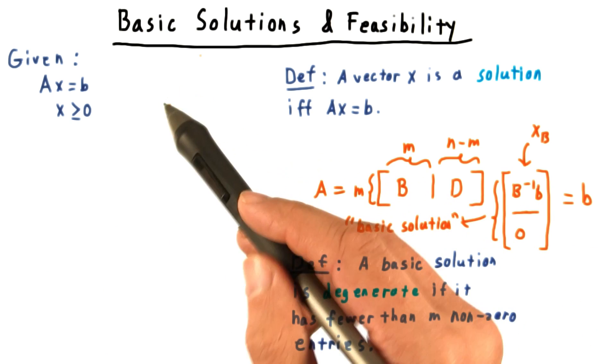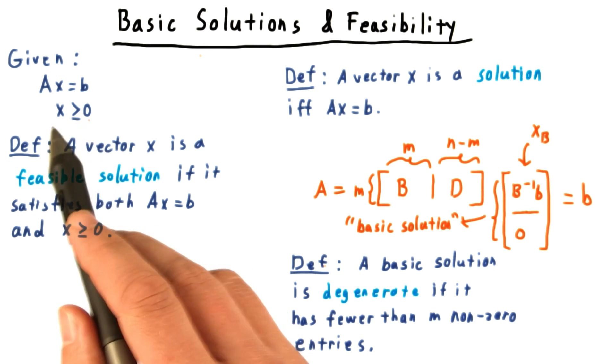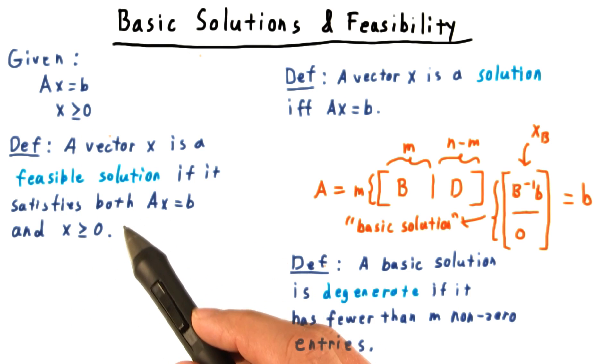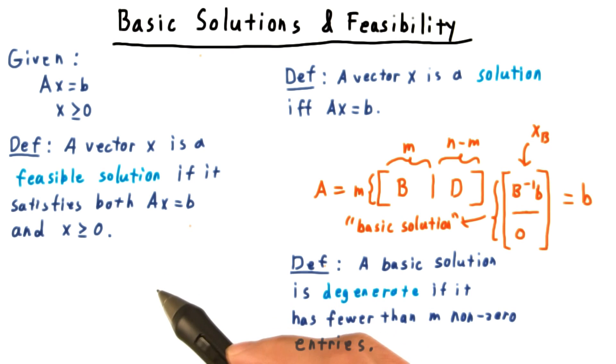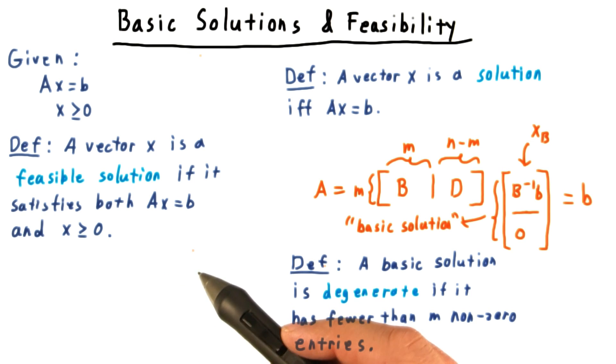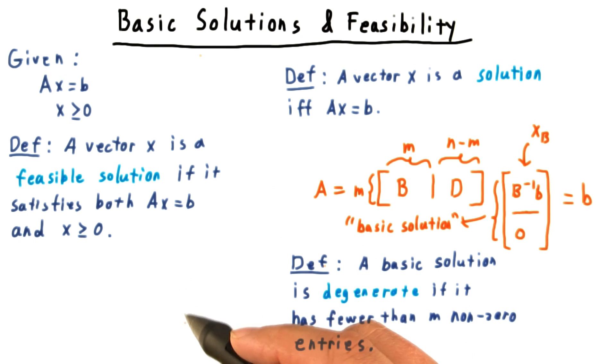So far, this vocabulary only addresses the equality constraints. Adding in the non-negativity constraints in the variables, we use the word feasible. Thus, a feasible solution is a solution that has all non-negative entries, and a basic feasible solution is one that comes from a basis as described above and has all non-negative entries.